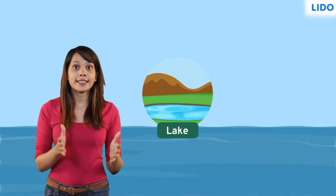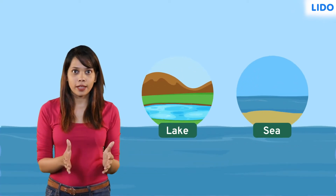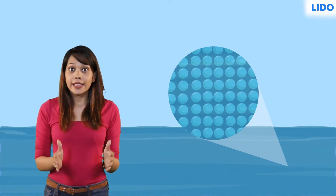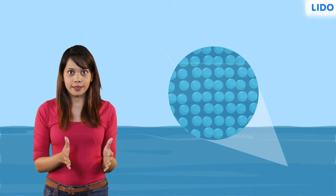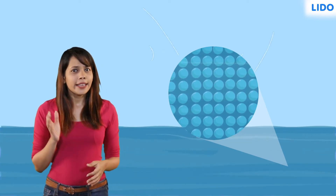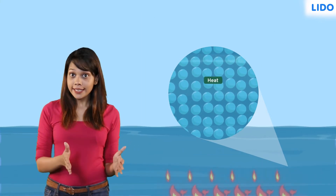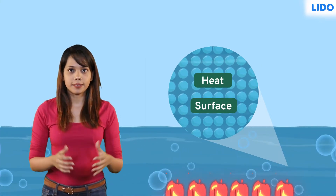Water in water bodies such as lakes and seas is in liquid form. If we want to really zoom in and observe the particles, they are eager to turn into gas. They need just two things: heat and access to the surface.